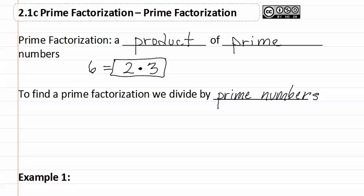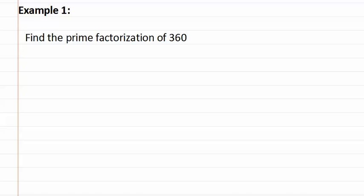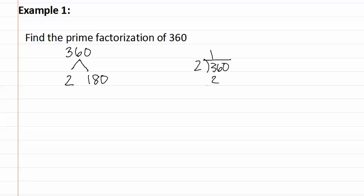Let's look at this in example one. Example one asks us to find the prime factorization of 360. We will start by using a method called a factor tree. This is where we split the number into two numbers that multiply together to make 360. Since 360 ends in zero, I know that two must divide evenly into it. Two divides into 360, 180 times. If you are not sure how many times it goes in, you can go to the side and do a quick long division to see that it divides in 180 times.